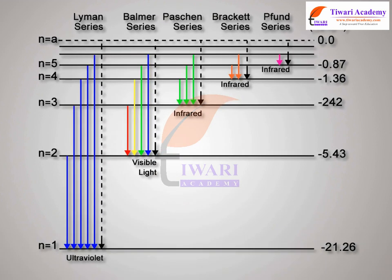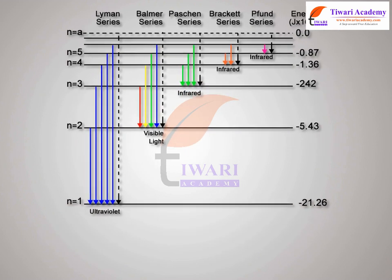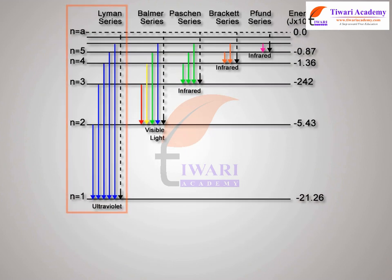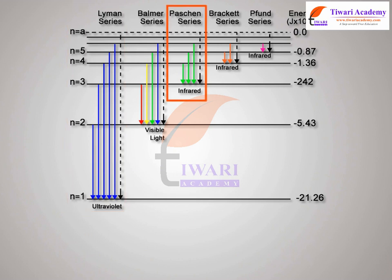These series are shown in the figure. Lines of the Lyman series are in the ultraviolet region, and those of Paschen, Brackett, and Pfund are in the infrared region. Lines of the Balmer series are in the visible spectrum region.